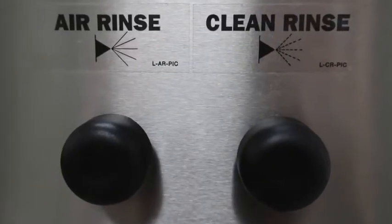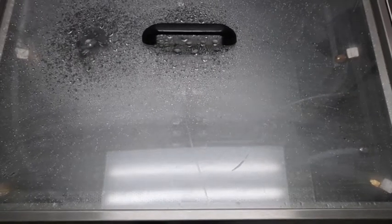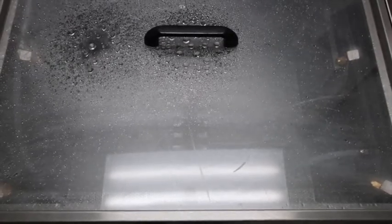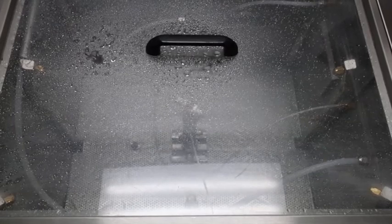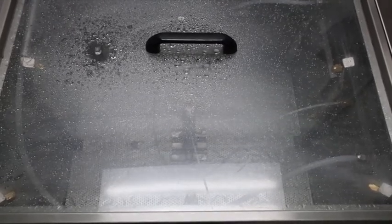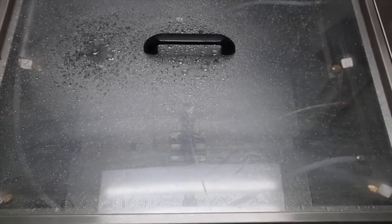After the wash cycle, hold the air rinse button for 3 seconds to send air through the nozzles in the tank. Then push and hold the clean rinse button for 5 seconds to send a preset amount of clean solvent through the jets. Your gun and pressure pot are now clean.